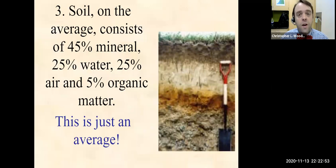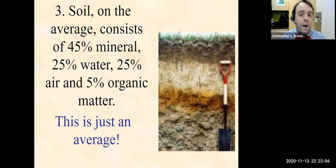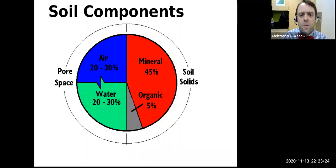Now soil — this is just an average — consists of about 45% mineral, 25% water, 25% air, and 5% organic matter. Again, that's just an average; every soil is different. So about 45% mineral, 5% organic — that's about half, and that's all the solid material — and then 25% air, 25% water, liquids and gas.